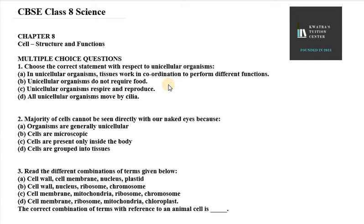The first question is: choose the correct statement with respect to unicellular organisms. Option A says in unicellular organisms, tissues work in coordination to perform different functions. This is incorrect because unicellular organisms don't have tissues — they are single cells. Option B says unicellular organisms do not require food. That is also wrong because they are living organisms, so they do require food. Option C says unicellular organisms respire and reproduce. This is correct — C is the right answer.